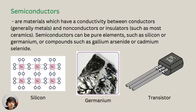One example is semiconductor advancement. Semiconductors are materials which have a conductivity between conductors and non-conductors or insulators. Semiconductors can be pure elements such as silicon or germanium, or compounds such as gallium arsenide (GaAs) or cadmium selenide. A transistor is composed of semiconductor materials.